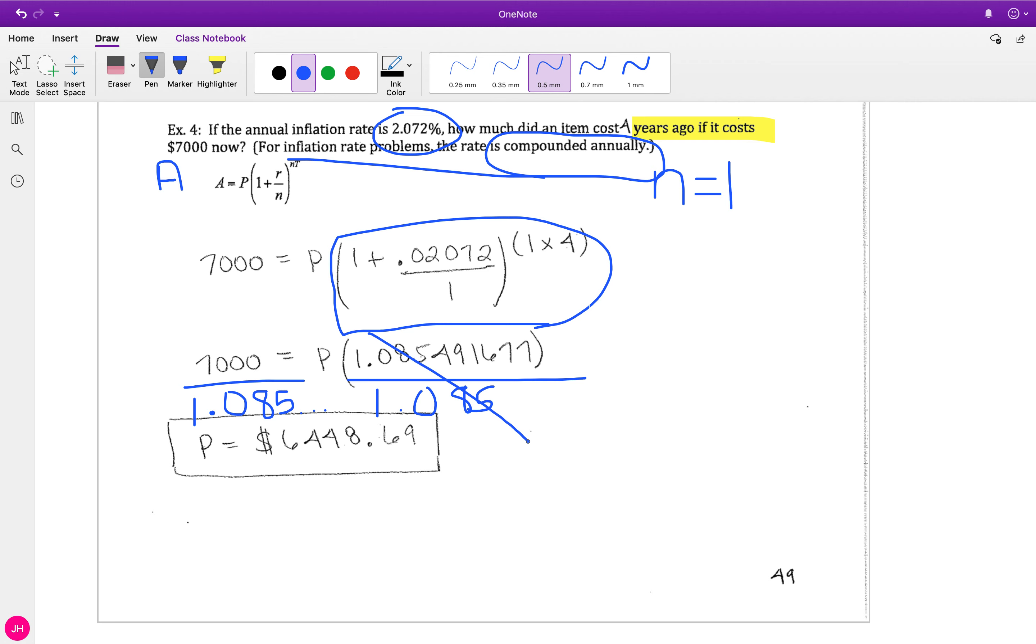Seven thousand divided by 1.085491677 gives me my final answer of six thousand four hundred forty eight dollars and sixty nine cents. What this means is if something costs six thousand four hundred forty eight dollars and sixty nine cents, with inflation, four years from now it should end up costing seven thousand dollars.